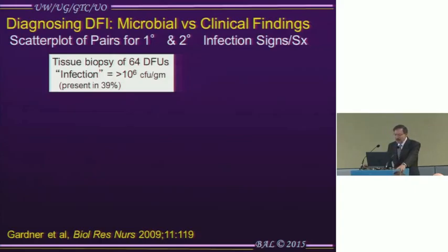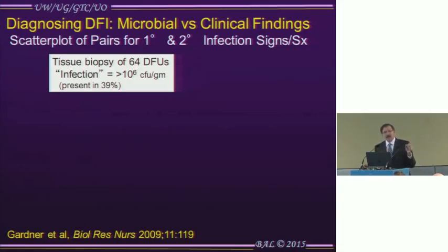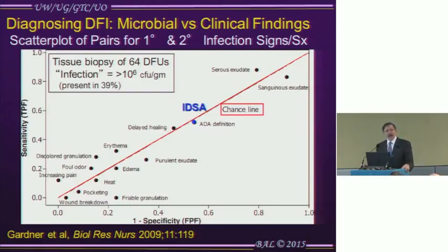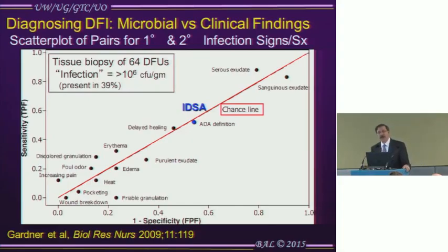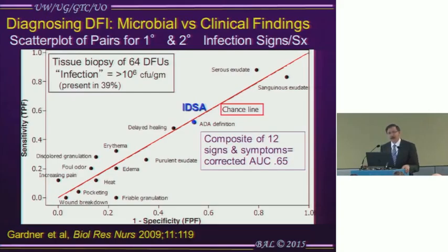Sue Gardner did interesting work in the nursing field, looking at diagnosing diabetic foot infection by comparing microbial findings against clinical findings. She looked at tissue biopsies of 64 patients with diabetic foot ulcers, defining infection as growth of greater than 10 to the 6th colony-forming units, found in 39% of patients. She then asked how well that correlated with clinical findings. That red line represents flipping a coin. All of these clinical findings are right along that line — no better than chance. Combining all 12 findings gives a receiver operating curve of about 0.65, which is at best moderately helpful.